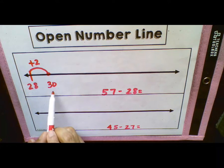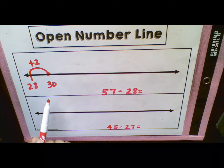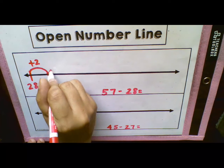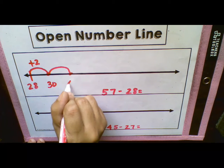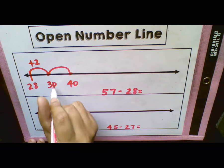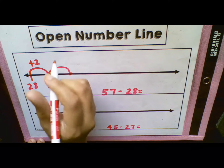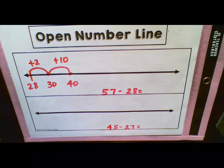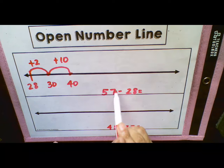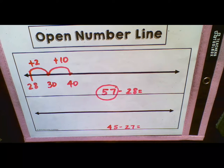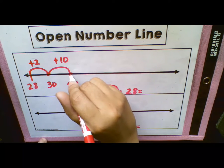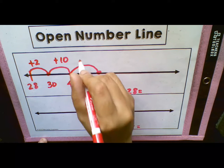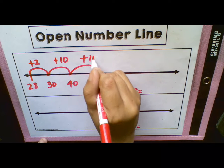Now again, we want to keep getting to tens. So I want to get to the next 10. So my next 10 is going to be 40. And as I said, it's a 10, so we know 30 plus 10 is going to give us 40. So I'm going to write plus 10. Next, I'm still not there. I need to get to this 57 here. I'm still not quite there yet. I'm at 40. So I think I can add another 10. 40 plus 10 is going to give us 50. So here's our other 10.